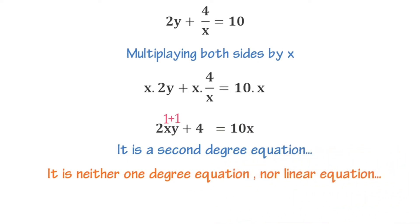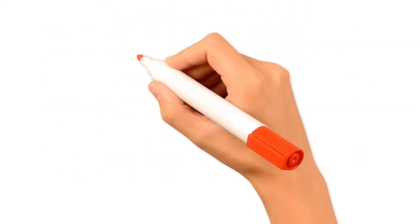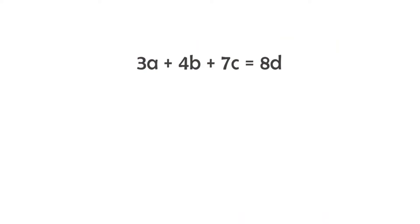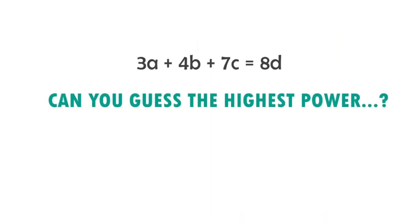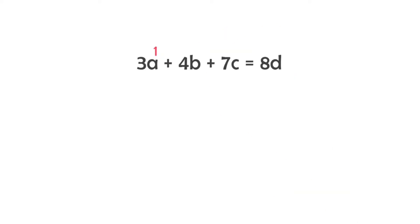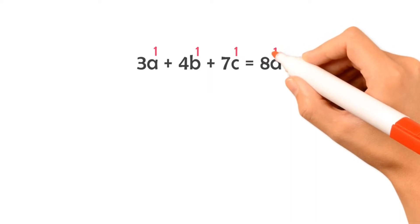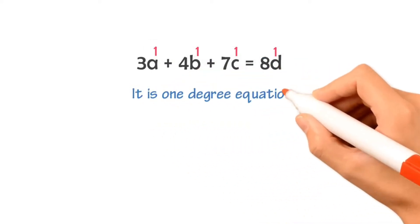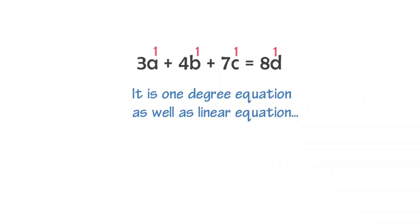Now let me give you one last example: 3a plus 4b plus 7c is equal to ad. Can you guess its highest power? There are four terms in this equation. The power of a is 1, the power of b is 1, the power of c is 1, and the power of d is also 1. Hence, the highest degree of this equation is 1. Thus, it is a one-degree equation and also a linear equation.